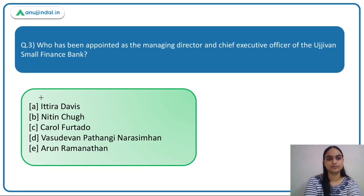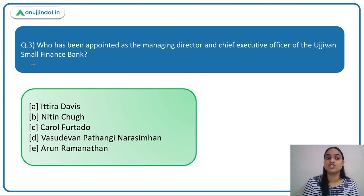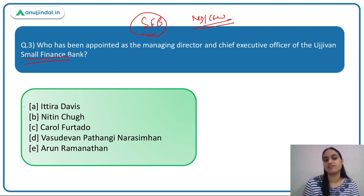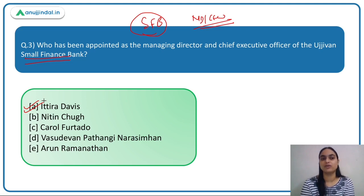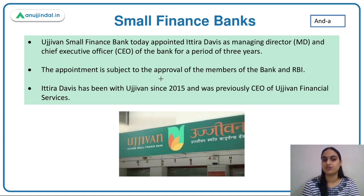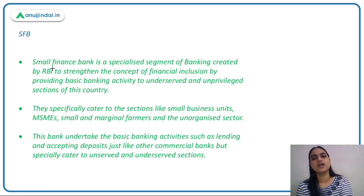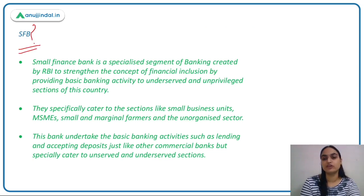The third question asks who has been appointed as the Managing Director and CEO of Ujjivan Small Finance Bank. Recently, Ujjivan Small Finance Bank appointed its MD and CEO for a period of around three years. The answer is option A — Ittira Davis has been appointed as the Chief Executive Officer and Managing Director of this bank. Prior to this, Ittira Davis was the CEO of Ujjivan Financial Services.